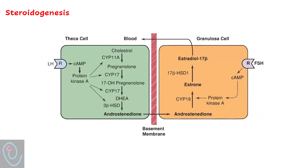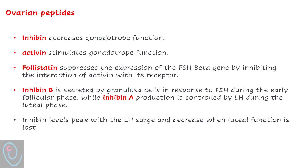The other function of the ovary is to produce steroid hormones, requiring two cell types — the theca cell and the granulosa cell — and two hormones, LH and FSH. This is called the two-cell, two-gonadotropin theory. Under the effect of LH, the theca cell converts cholesterol into androstenedione, but lacks the aromatase enzyme. Androstenedione travels to the nearby granulosa cell, which, under the effect of FSH, converts androstenedione into estradiol.